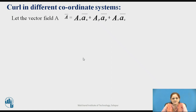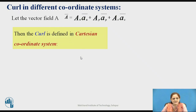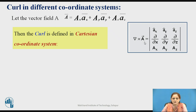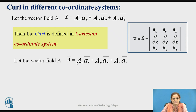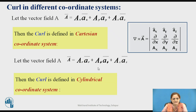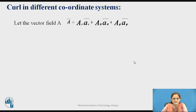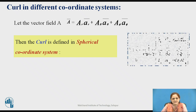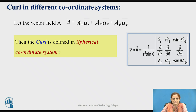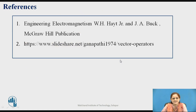The curl in different coordinate systems is defined as follows. For a vector field a = a_x â_x + a_y â_y + a_z â_z, the curl in Cartesian is the cross product of del with the vector, given by the determinant with rows [â_x, â_y, â_z], [∂/∂x, ∂/∂y, ∂/∂z], and [a_x, a_y, a_z]. The curl operation in cylindrical coordinate system is defined with a corresponding determinant. These are the references for this session.